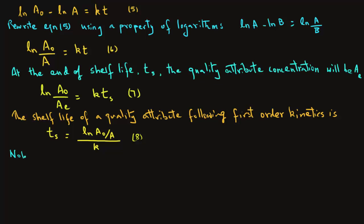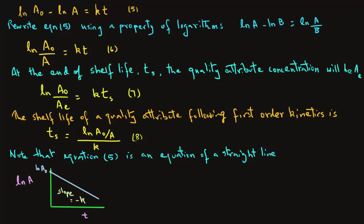Note also, the equation at the top, equation 5, is an equation of a straight line. So, we can make a plot of natural log A versus time T, and if we plot the data, we will obtain a straight line that will be sloping downwards since the concentration is decreasing. And the slope of this line will be minus K.